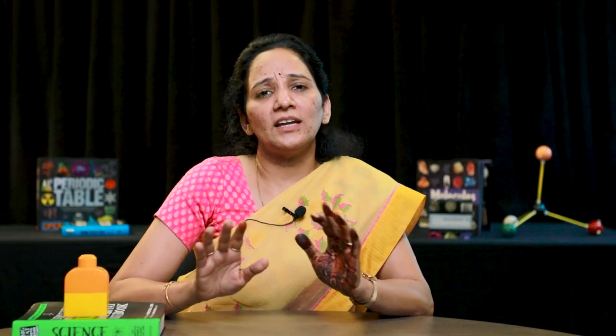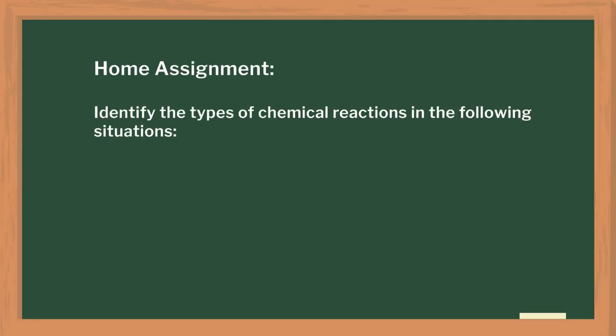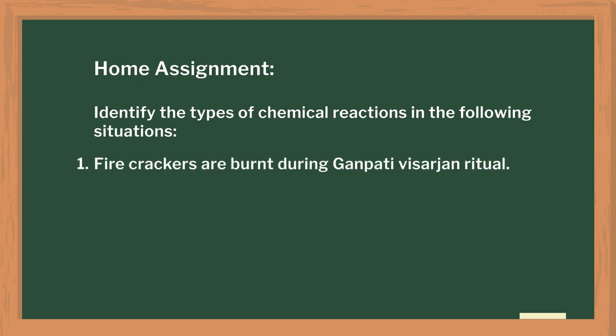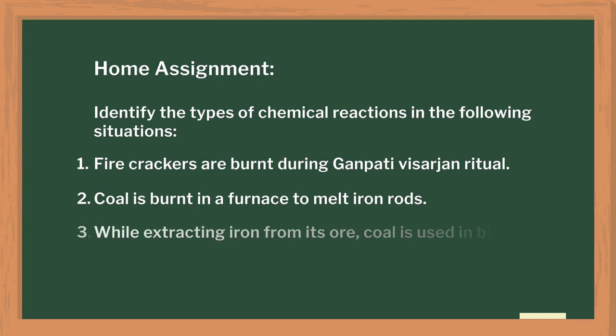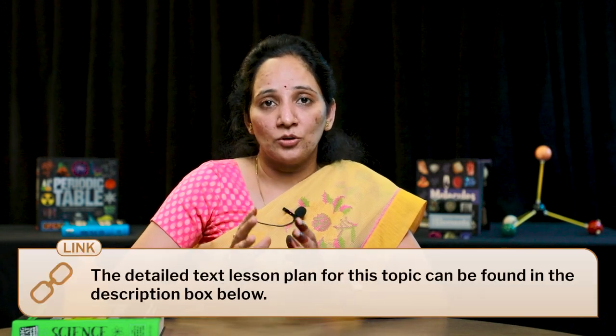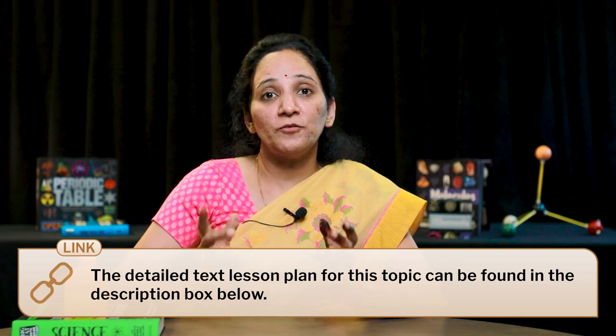I revised all the reactions with a match-the-pair exercise and gave students a few questions as a home assignment. In this assignment, students had to identify the types of chemical reactions — for example, what happens when firecrackers are burnt during Ganpati Visarjan, or when coal is burnt in a furnace to melt iron rod, or when coal is used in a blast furnace to extract iron from its ore. The main aim of all these activities was to make students understand the types of chemical reactions. All materials used are easily available at home, so students can even perform these activities at home. Do try these activities in your class and let us know if your students loved it.